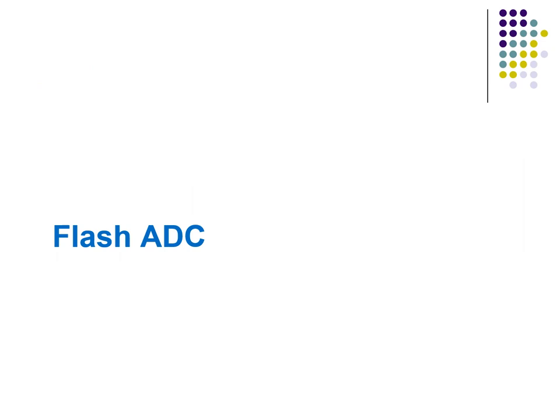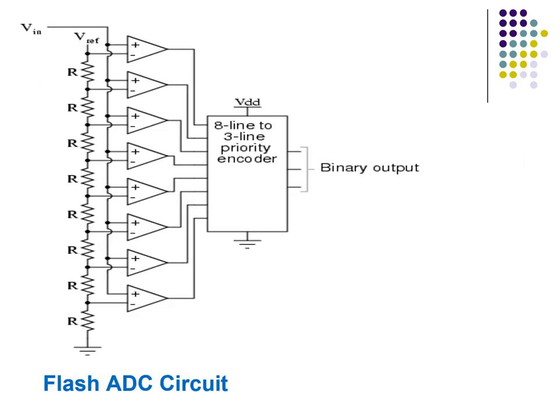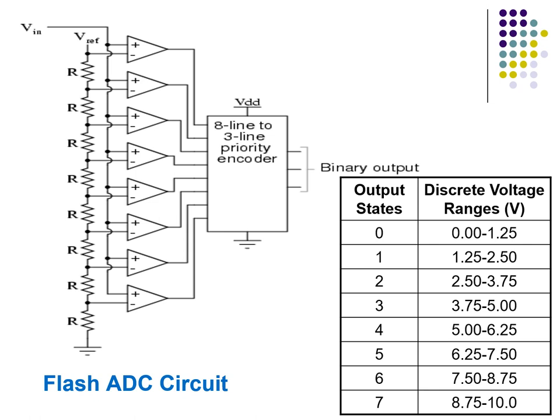In a flash ADC, there are eight comparators, each one comparing the input signal to a unique reference voltage. The outputs of the comparators are connected to an 8-to-3 line priority encoder, which produces a binary output. All the resistors are equal and they form a potential divider for the reference voltage. As the analog input voltage exceeds the reference voltage at each comparator, the comparator outputs will sequentially saturate to a high state.